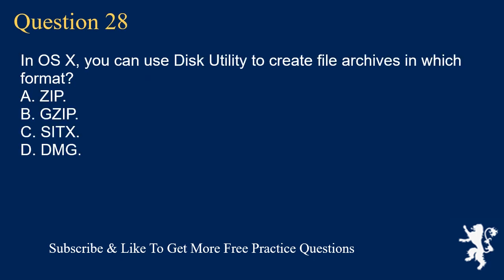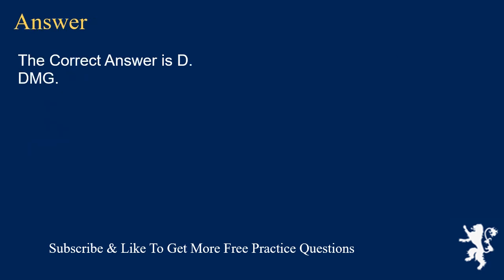Question 28. In OSX, you can use Disk Utility to create file archives in which format? A. ZIP. B. ZIP. C. Seach. D. DMG. The correct answer is D: DMG.